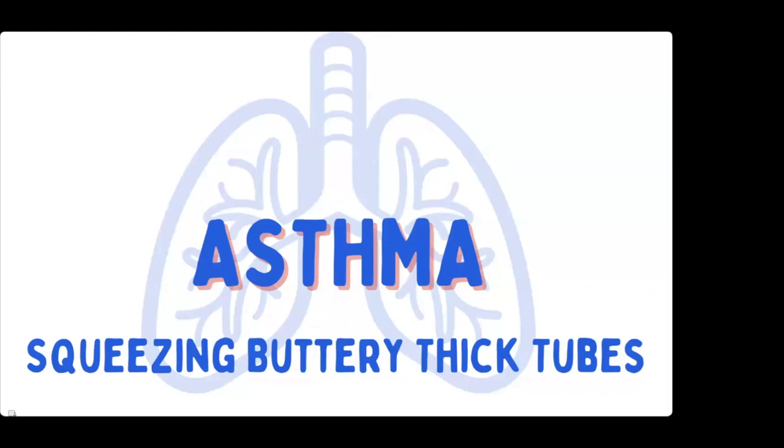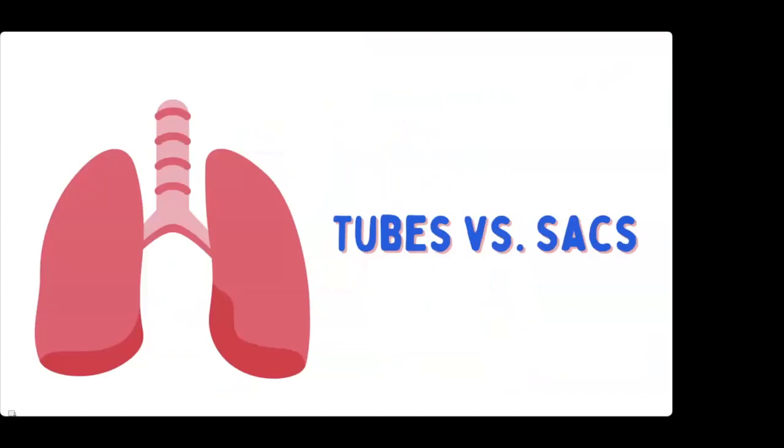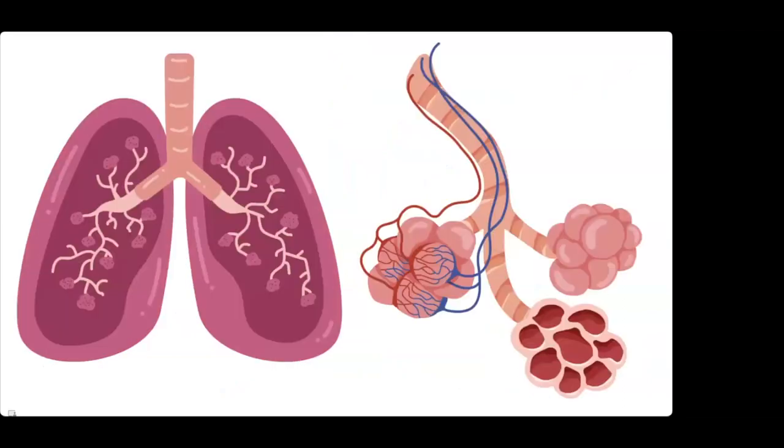When we look at airway problems, we think: is it a tube issue or a sac issue? Is it a bronchial structural issue in the tubes—trachea, bronchi, bronchioles—or is it a sac issue with the alveoli? Here's our picture of the airway. We have the trachea, which leads to the bronchi, then down to the bronchioles and finally to the alveoli.